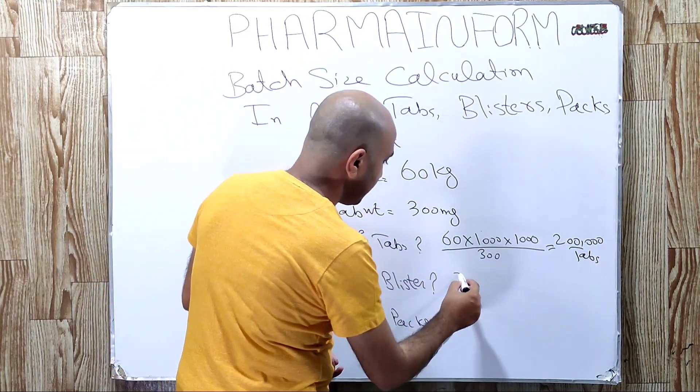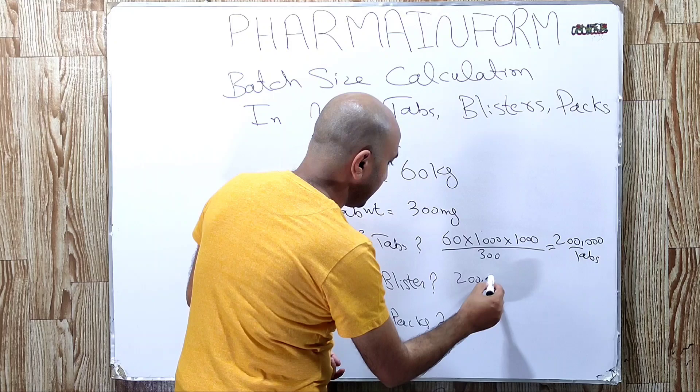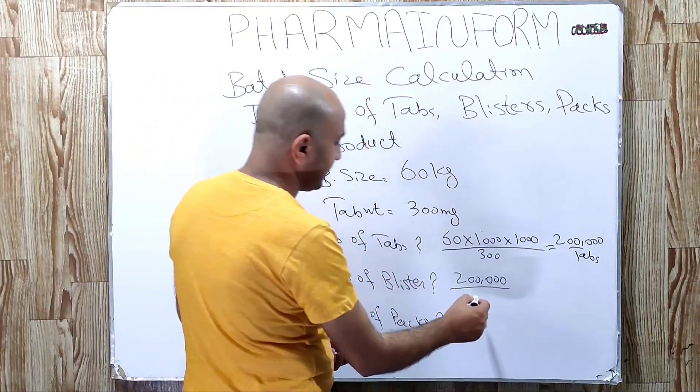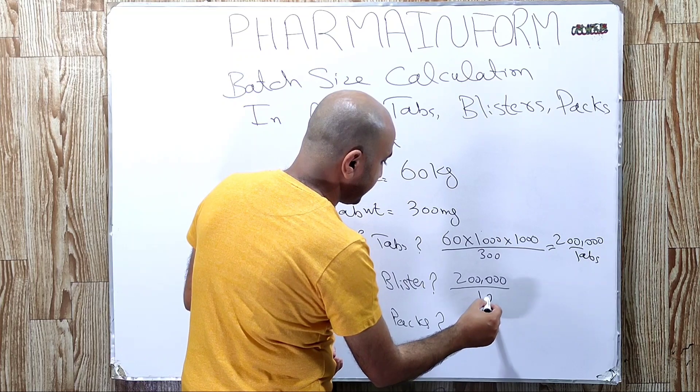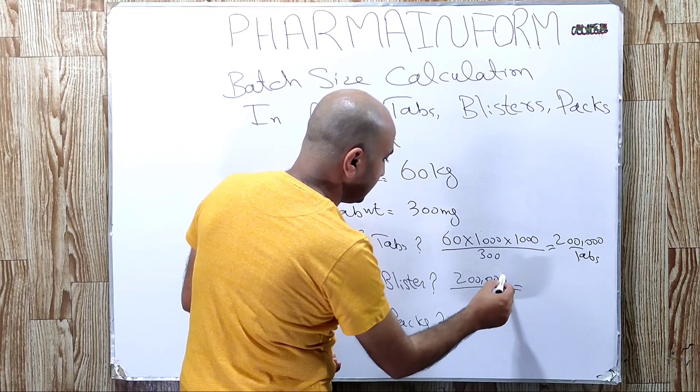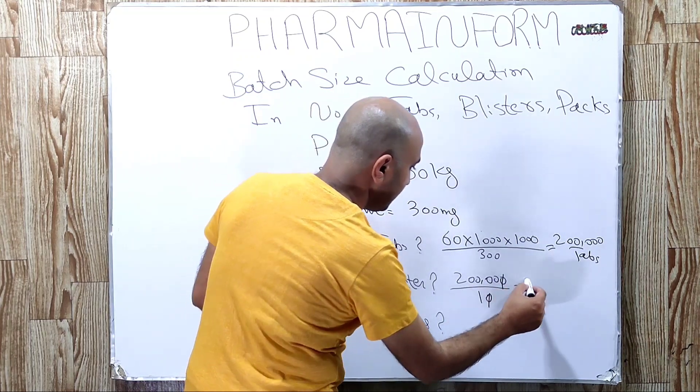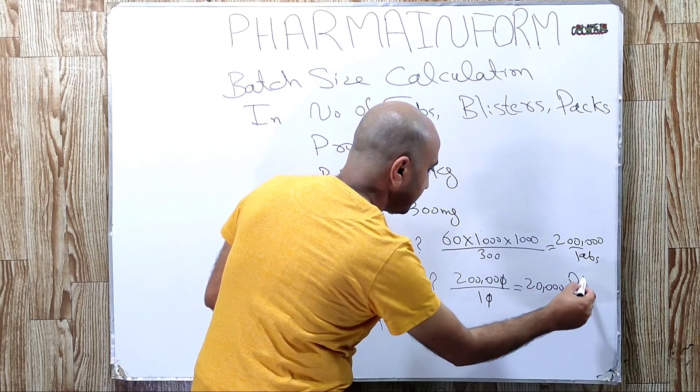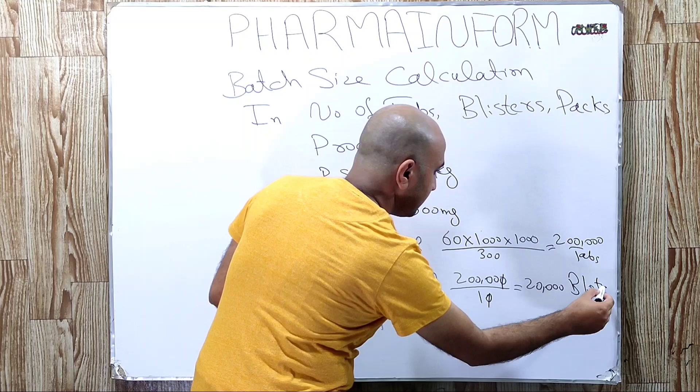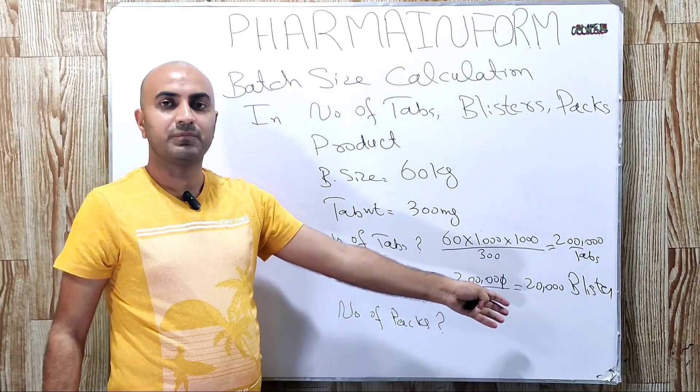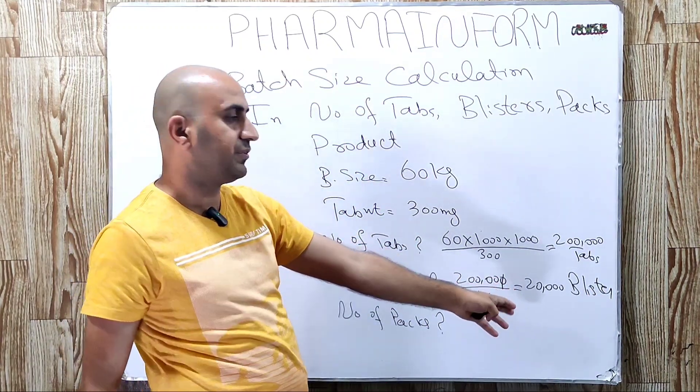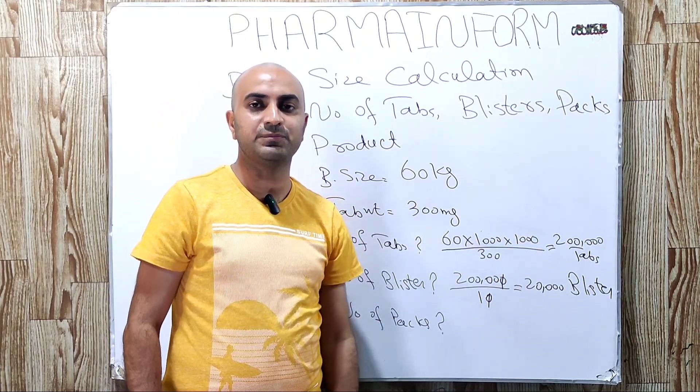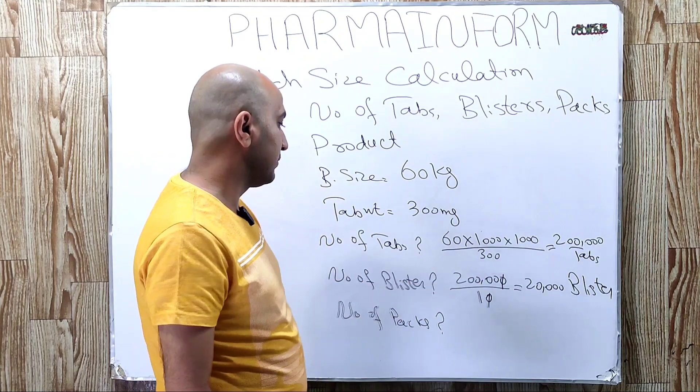2 lakh divided by the number of tablets in each blister, which is 10. So the answer will be 20,000 blisters. This means we can prepare 20,000 blisters from 2 lakh tablets if each blister contains 10 tablets.